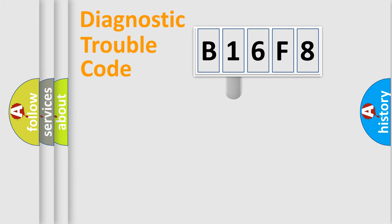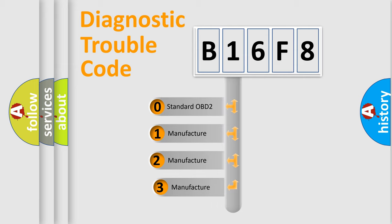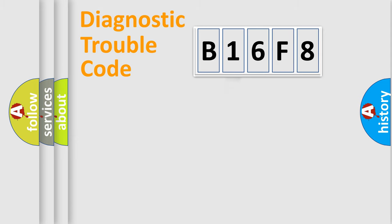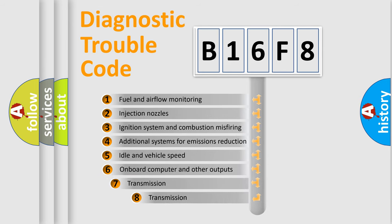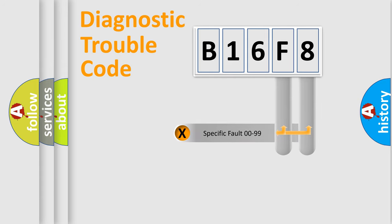This distribution is defined in the first character of the code. If the second character is expressed as zero, it is a standardized error. In the case of numbers 1, 2, or 3, it is a manufacturer-specific expression of a car-specific error. The third character specifies a subset of errors. The distribution shown is valid only for the standardized DTC code.